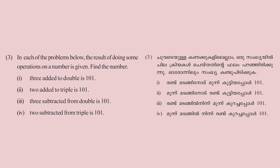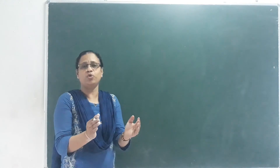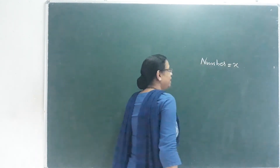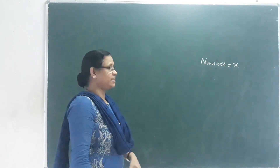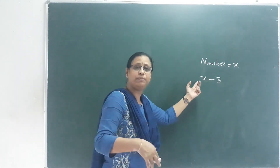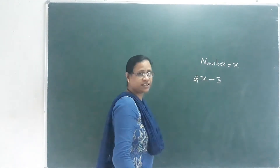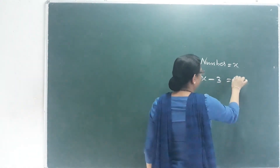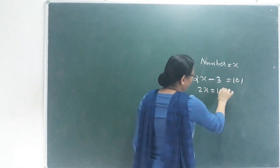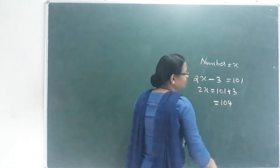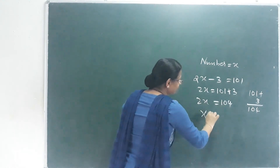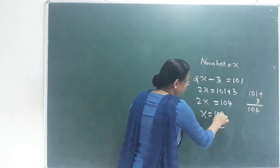Next: 3 subtracted from double a number is 101. So 2x minus 3 equals 101. Then it is plus 3 on the other side, so 2x equals 101 plus 3 equals 104. x equals 104 by 2, which equals 52.